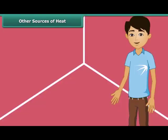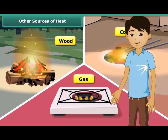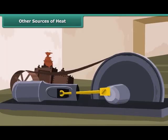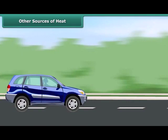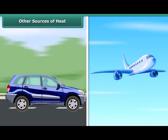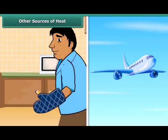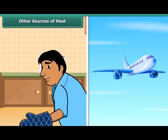Man can generate heat by burning wood, coal and gas. Wood, coal and gas are called fuels. Fuels burn in machines to make them work. A motor car runs by burning fuel. An aeroplane flies by burning fuel. Electricity also gives heat.